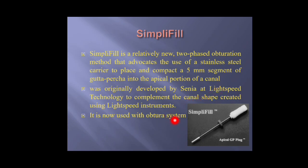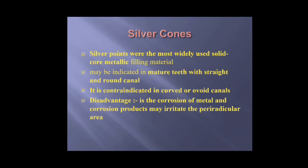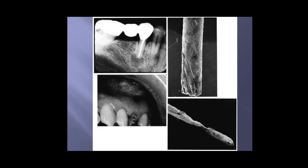The SimpleFile technique is a carrier-based system where the carrier is a metal shaft with a five-millimeter segment of gutta-percha, used to control and seal the apical area. The Obtura system then inserts soft gutta-percha using the thermoplasticized gun. Previously, silver cones were used as root canal filling material, but they are no longer used due to corrosion of the metal and clinical failure, which may cause periapical irritation.